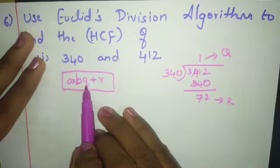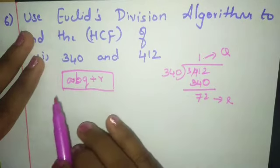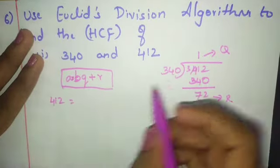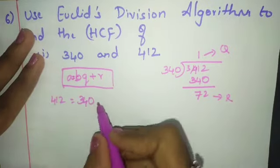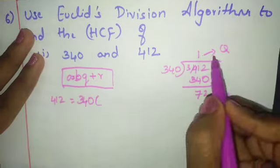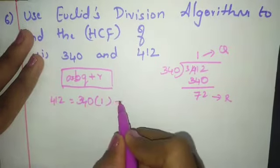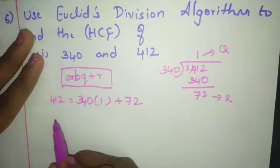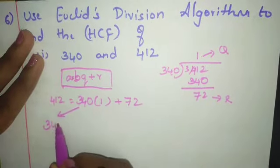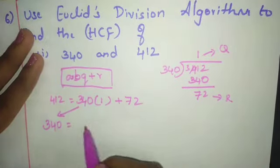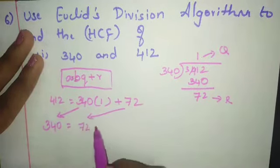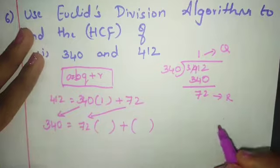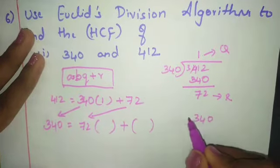We know Euclid's division lemma: a = b × q + r. So here a is 412, b is 340, q is 1, and the remainder is 72. Now we take 340 = 72 × something + remainder.